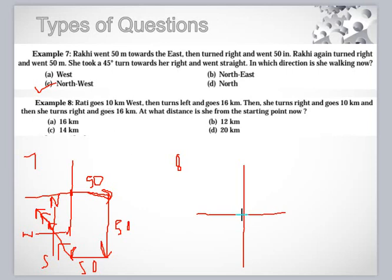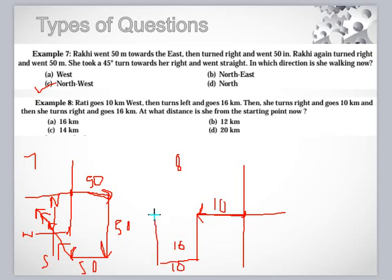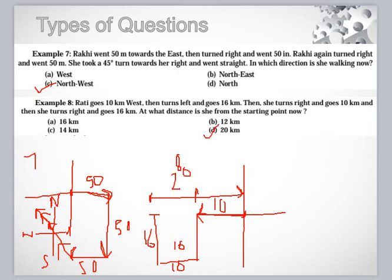Rati. Rati goes 10 kilometers west. Here is Rati, and 10 kilometers west — I am taking this direction as west. She then turns left and goes 16 kilometers. She turns right and goes 10 kilometers. She turns right and goes 16 again — meaning parallel to the first 16. So at what distance is she from the starting point? From here to here it is 10, and from here to here it is also 10. So 10 plus 10 equals 20. The distance is 20 kilometers.